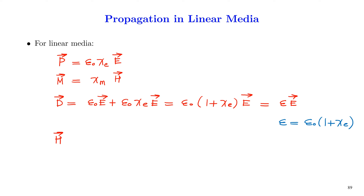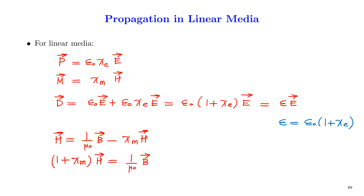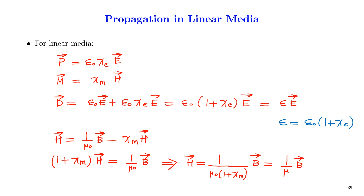The magnetic polarization M depends on the external field H through χ_m, the magnetic susceptibility. Rearranging: H = B/μ₀ − χ_m·H gives (1 + χ_m)H = B/μ₀, so H = B / (μ₀(1 + χ_m)) = B/μ, where μ = μ₀(1 + χ_m) is the permeability of the dielectric media.